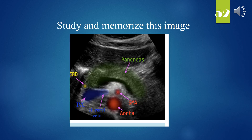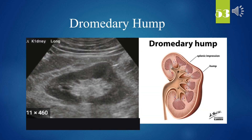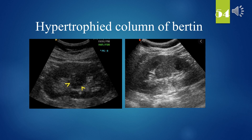Study and memorize this image. What is that? Dromedary hump. The yellow arrow is 0.2. Hypertrophied column of Bertin.